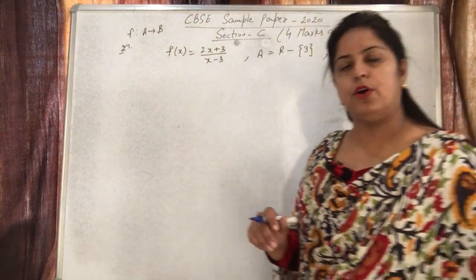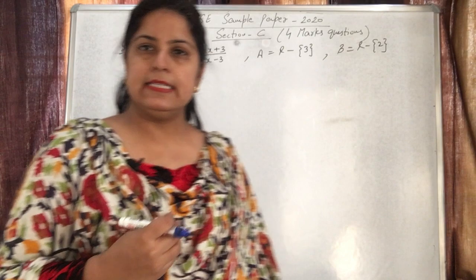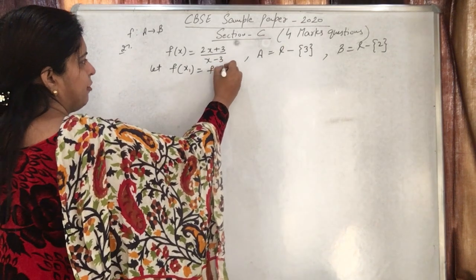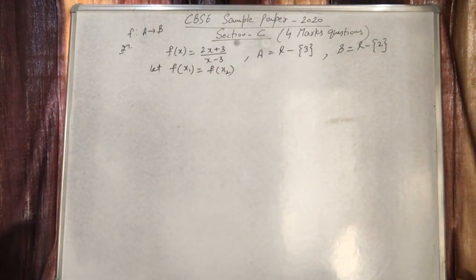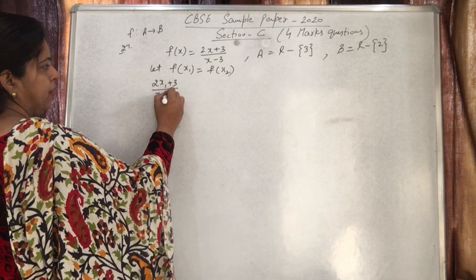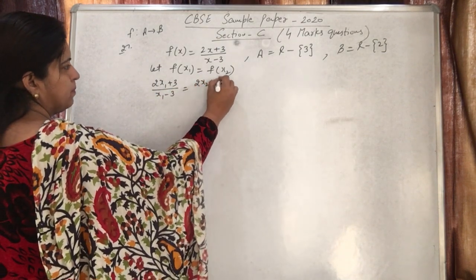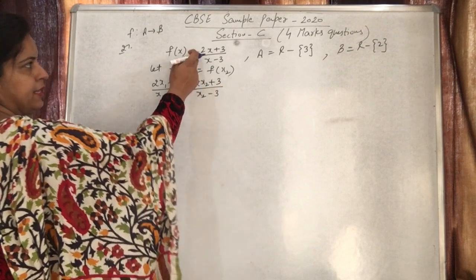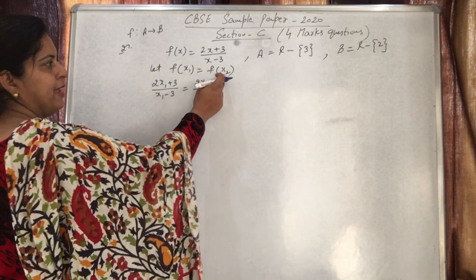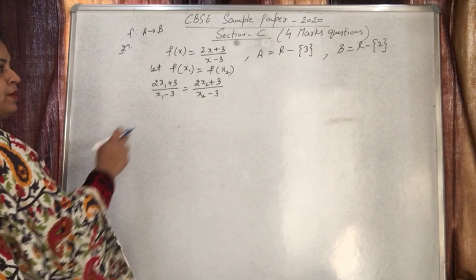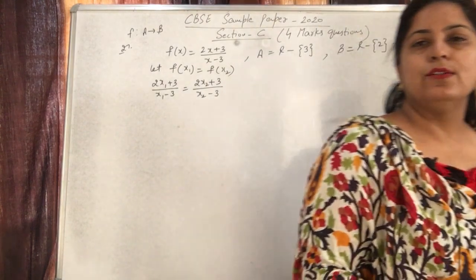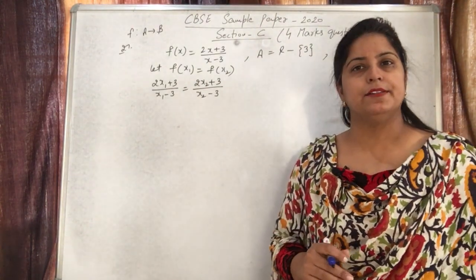To check 1-1, we let f(x₁) = f(x₂). So (2x₁+3)/(x₁-3) = (2x₂+3)/(x₂-3). We cross-multiply: 2x₁x₂ + 3x₂ - 6x₁ - 9 = 2x₁x₂ + 3x₁ - 6x₂ - 9. The 2x₁x₂ and 9 terms cancel, giving us x₁ = x₂. Therefore the function is 1-1.